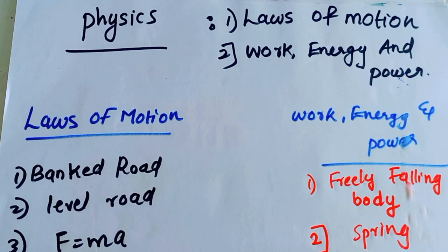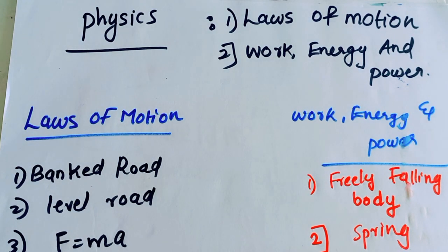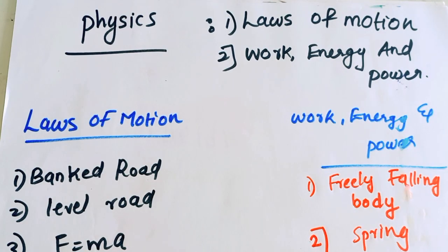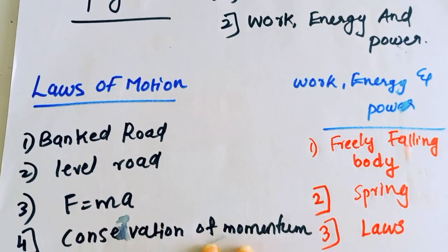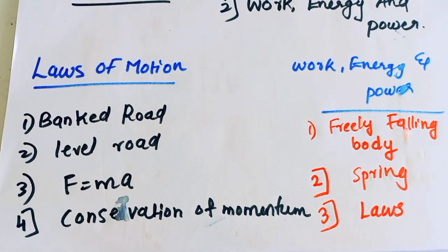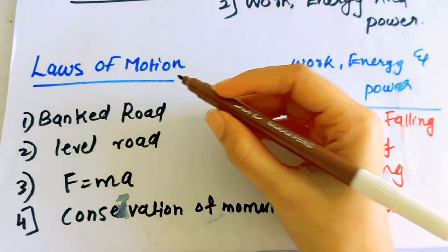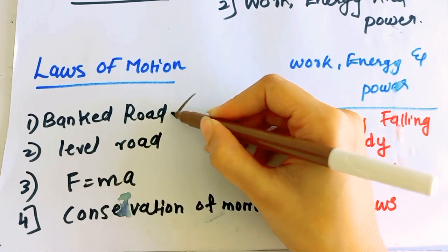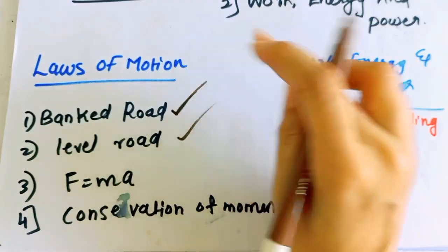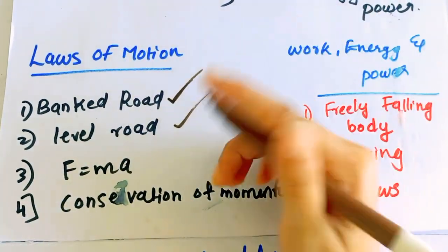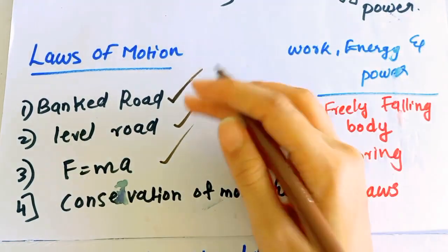In these two chapters, any repeated questions are covered. We have a few questions from these two chapters. In this video, there are 4 important questions in this model. In this chapter, we have a few questions about work energy. In the Laws of Motion, the banked road is very important, and the circular level road is also important.